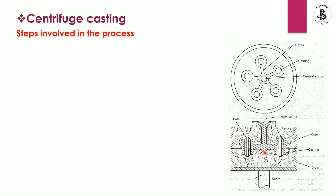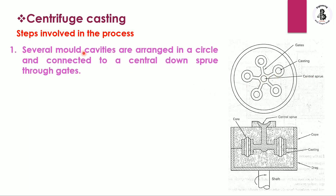This is the side view of the centrifuging casting process. The shaft is rotating, and by this shaft rotation the mold also rotates. You can see the cast products on the top side, along with the gates. The molten metal is poured through the central sprue. Several mold cavities are arranged in a circle and connected to the central down sprue through the gates. That is the basic arrangement of the centrifuging casting process.